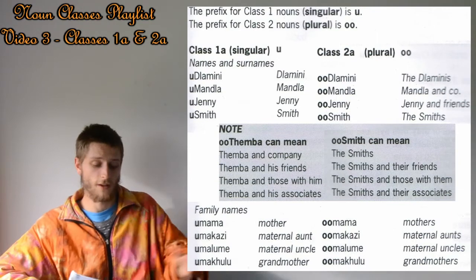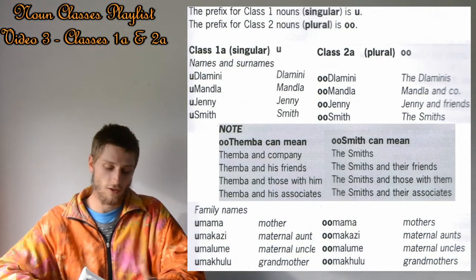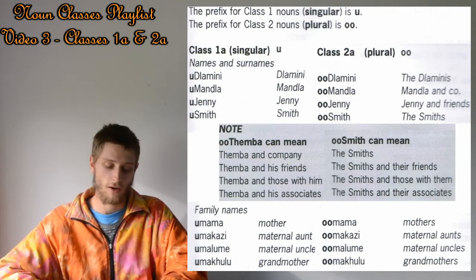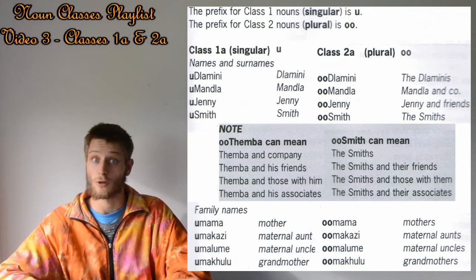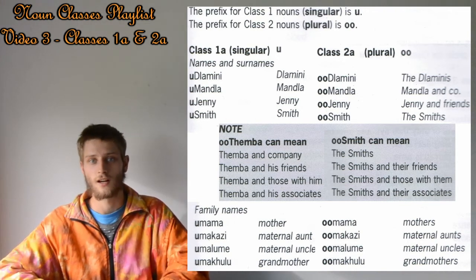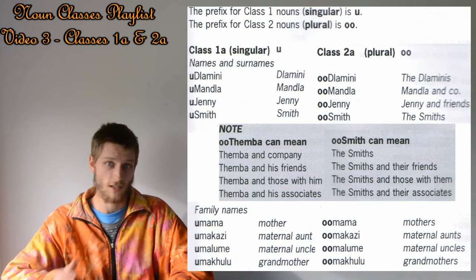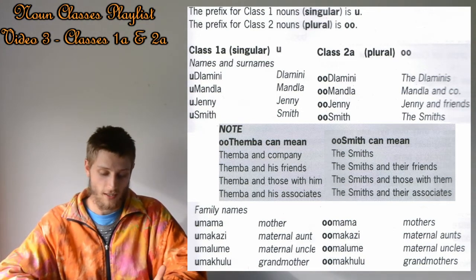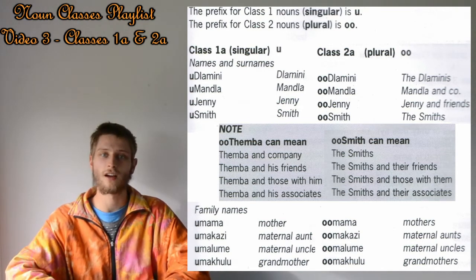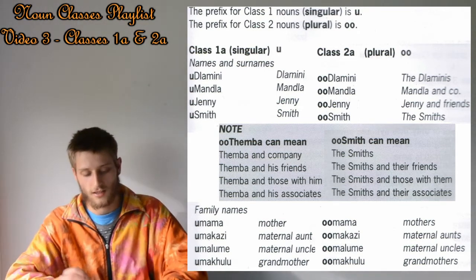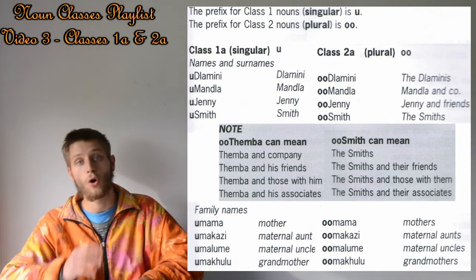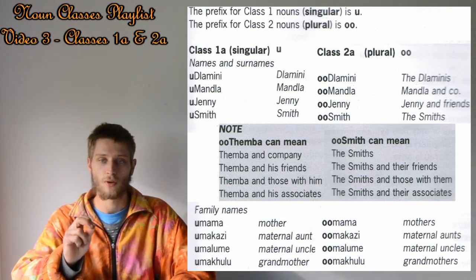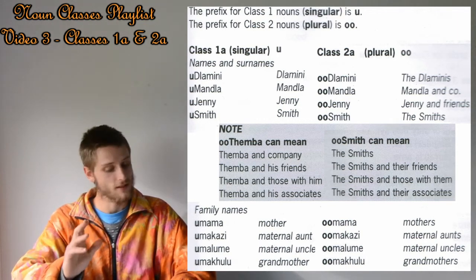I've got them overlaid here so you can follow along. Clearly the first names and surnames — these are what we call proper nouns in English — are grouped into class 1A and 2A in isiXhosa, because the classification of nouns in isiXhosa is different to English. For example: uDlamini and ooDlamini. Now I must really say right from the outset — the plural noun prefix 'oo' is a double O. It's not like the English O as in 'food' or 'mood'; it's a different pronunciation.